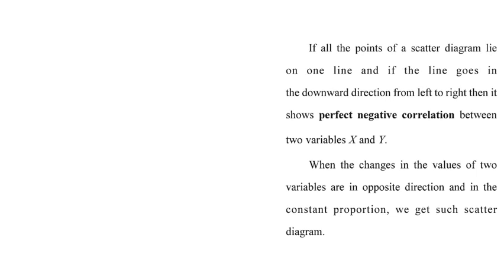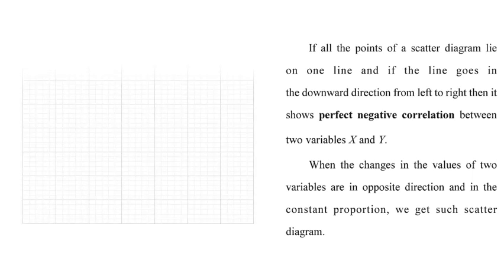If the points of a scatter diagram lie on a single line going from left top to right bottom, that is the exact opposite — we call it a perfect negative correlation. Left bottom to right top is perfect positive; left top to right bottom is perfect negative correlation.